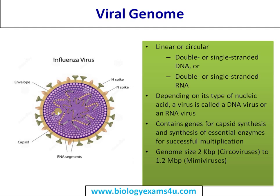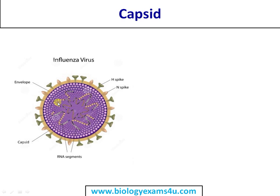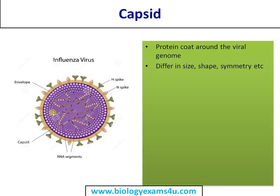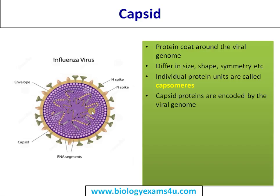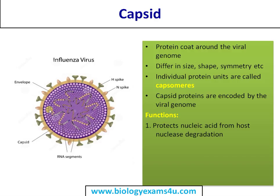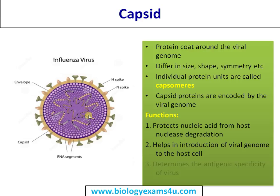The capsid is a coat that surrounds the genetic material. It differs in size, shape, and symmetry — the capsid determines the symmetry of the virus. Individual units are called capsomeres. Capsid proteins are encoded by the viral genome, as it is the most essential protein of the virus — it protects the genetic material. Functions of the capsid include: protecting the genetic material from nuclease degradation, since free DNA or RNA in a cell system would be degraded by nuclease activity. The capsid also helps in the introduction of the viral genome into the host cell by attachment and injection of the viral genome. It also determines the antigenic specificity of the virus, as the host recognizes different types of viruses based on the structure and antigenic properties of the capsid.